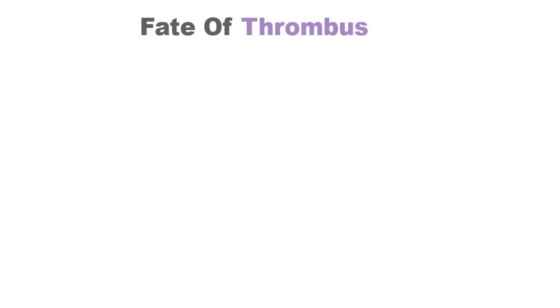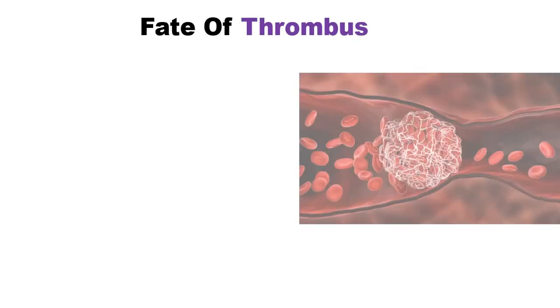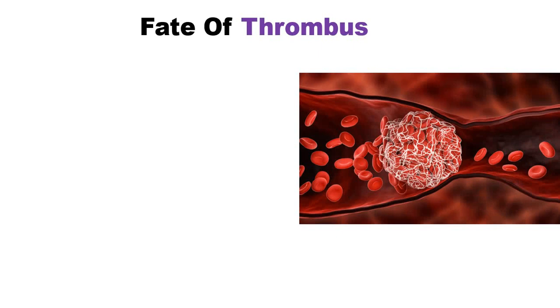Hi everyone, in this video we will discuss about the fate of a thrombus. So first of all, we will discuss the mnemonic to make it easy. The mnemonic is REPORT. First of all, R for resolution, it is the first stage of the fate of the thrombus which can occur.